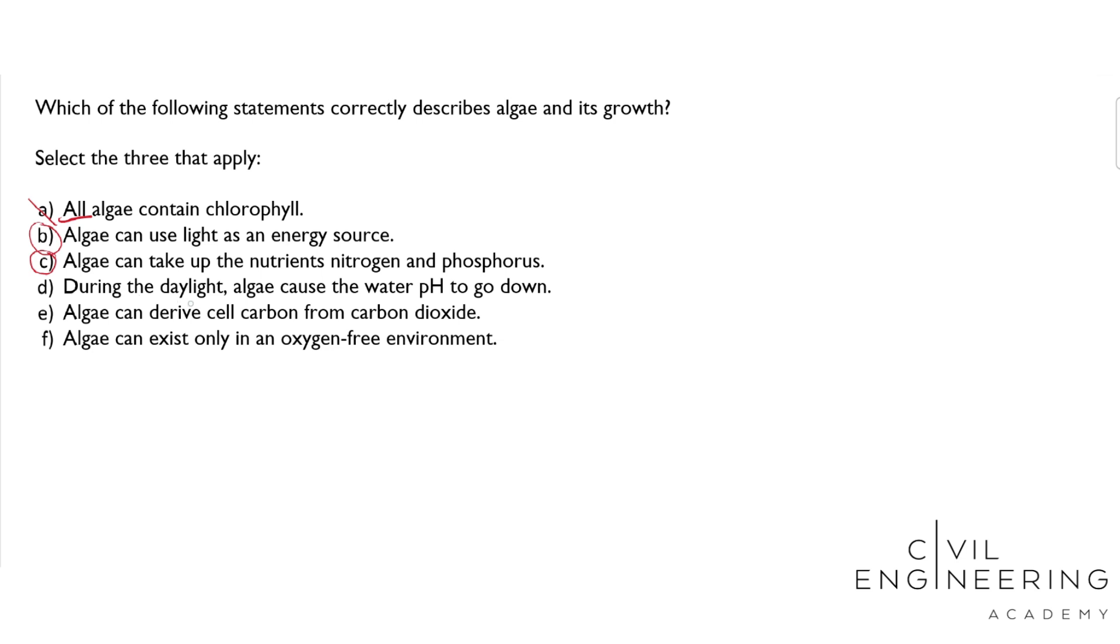And D: During the daylight, algae cause water pH to go down. If you don't know this, just keep going and see what the other options are. But you should know that algae actually cause the pH to go up because, since they're little plants, they uptake carbon dioxide and these nutrients and sunlight, and that's how they grow.